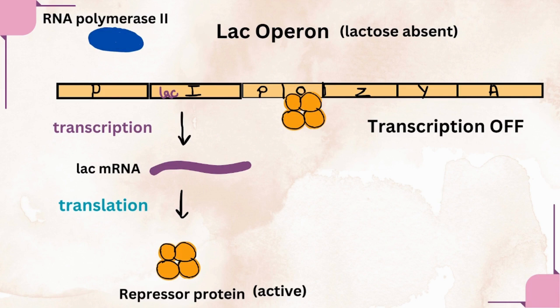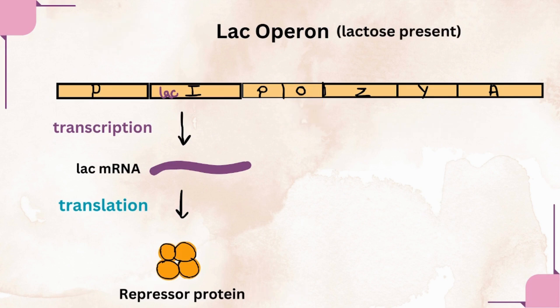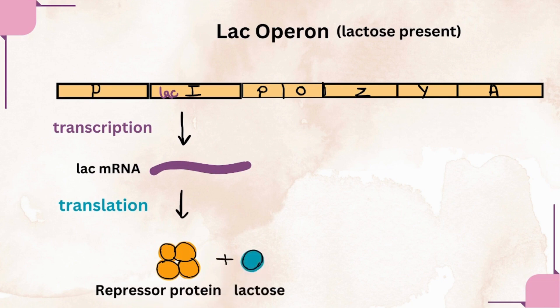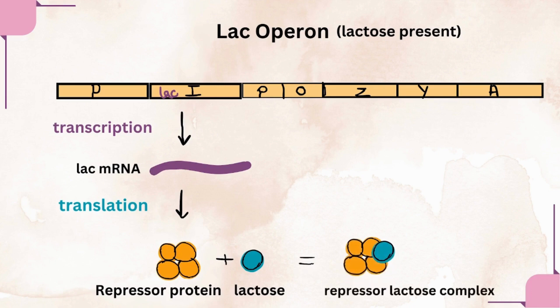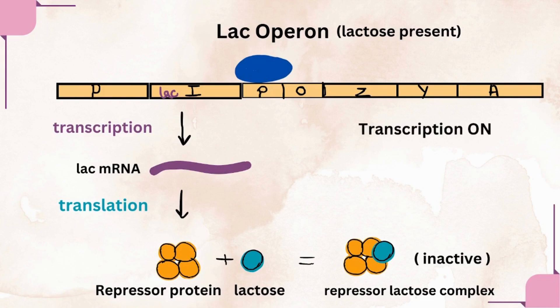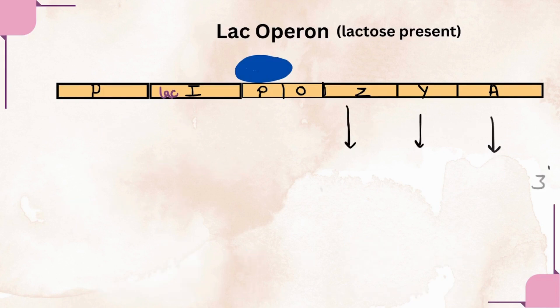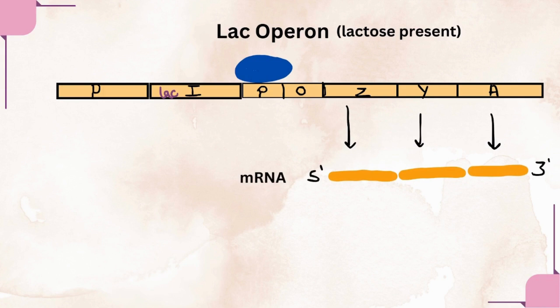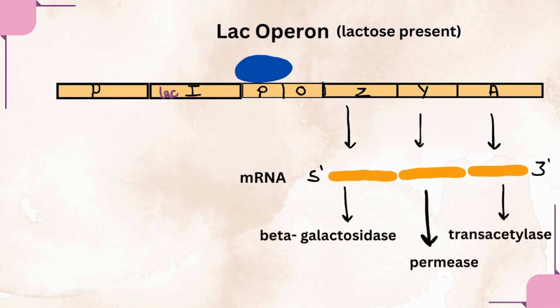When lactose is present in the medium, the repressor protein binds with the lactose sugar and forms the repressor-lactose complex. As lactose binds with the repressor protein, some conformational changes occur in the repressor protein, causing it to become inactive. Hence, this inactive repressor protein cannot bind to the operator. As the operator is free, RNA polymerase binds to the lac promoter and initiates transcription of the three structural genes. The mRNA of the structural genes undergoes translation and results in the formation of proteins. These proteins act as enzymes.